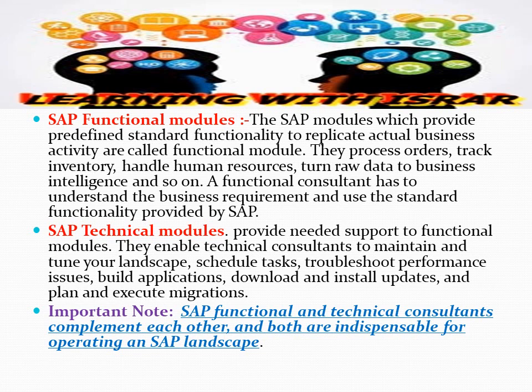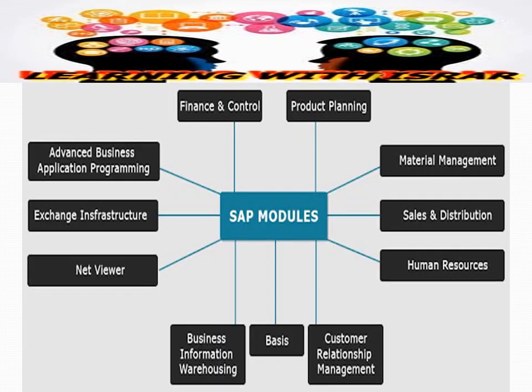It is important to note that SAP functional and technical consultants complement each other and both are indispensable for operating an SAP landscape. As shown in this picture, Finance and Controlling, Production Planning, Material Management, Sales and Distribution, Human Resources, and CRM are functional modules, whereas Basis, Business Information Warehousing, NetWeaver, Exchange Infrastructure, and ABAP are technical modules — all complementing and supplementing each other in an SAP landscape.